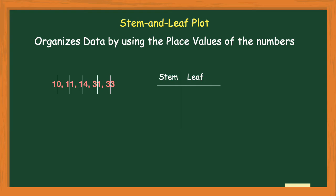I have three numbers with a one in the tens place, so I'll put that in my stem. I complete all of my stems first before doing my leaves. The stems go in counting order starting at the top. My numbers go from the tens to the thirties, so my stems are going to read 1, 2, and 3, because I don't have any numbers after the thirties.